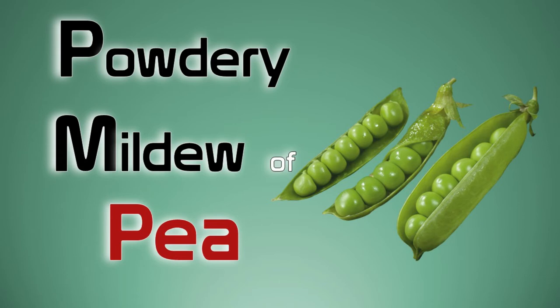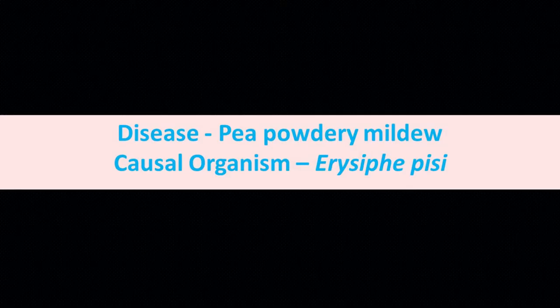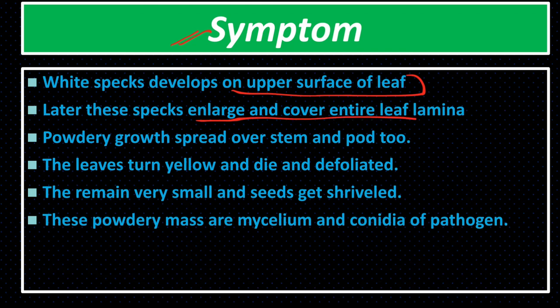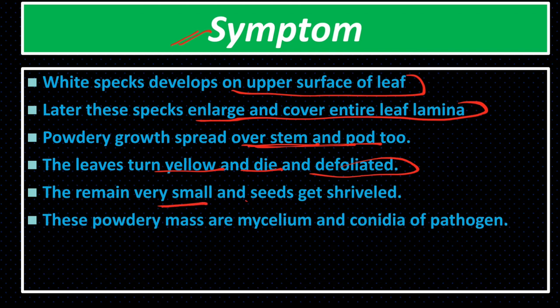Powdery Mildew of Pea. Powdery Mildew of Pea is caused by the fungus Erysiphe pisi. Symptom: White specks develop on the upper surface of the leaf. Later these specks enlarge and cover the entire leaf lamina. Powdery growth spreads over the stems and pods. The leaves turn yellow, die and defoliate. Plants remain very small and seeds get shriveled. These powdery masses are the mycelium and conidia of the pathogen.